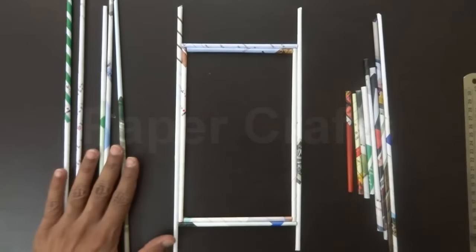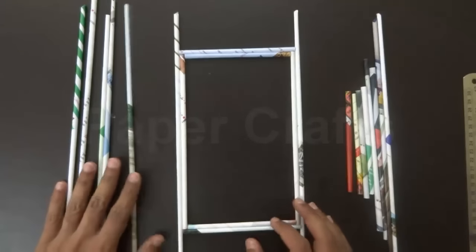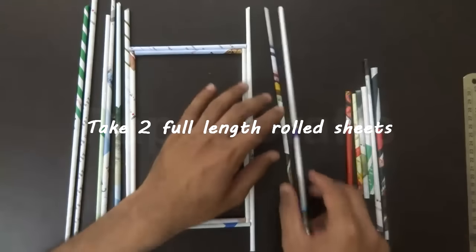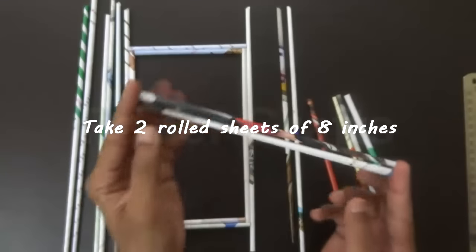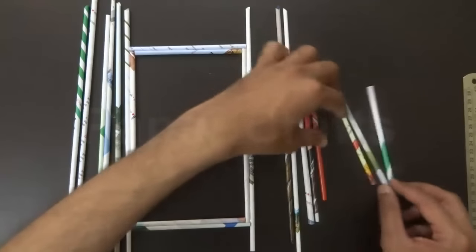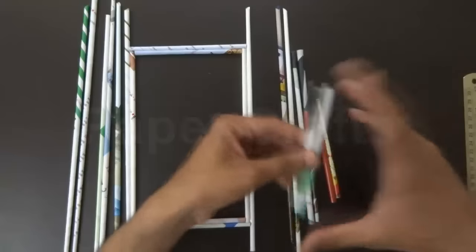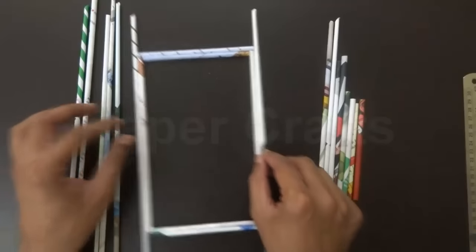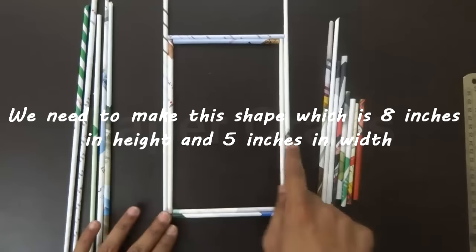Once we have rolled a number of sheets we need to make this shape. We need two full size rolled sheets and two sheets cut in length about 8 inches, two sheets cut in length of 5 inches, and two in length of 4.5 inches. This makes a shape which is 8 inches in height and 5 inches in width.